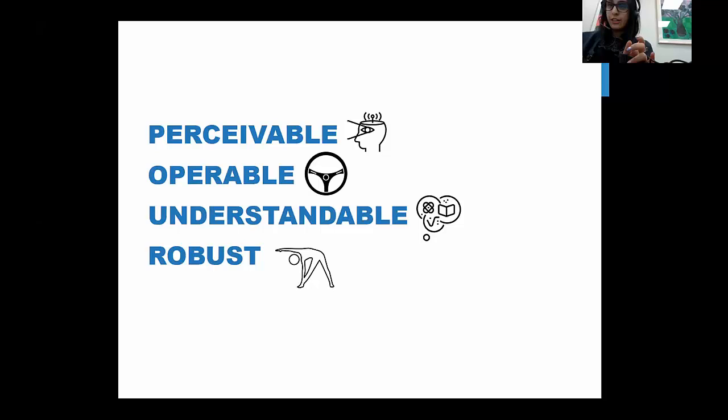The fourth principle, robust, is similar to operability but focuses on ensuring web content can be reliably interpreted by different tools and assistive technologies, even as those technologies change. You can design content to be as flexible as possible for future changes. This principle refers more to back-end software design, and Kyle will go into more detail about how Tableau is making changes to be adapted for different technologies.